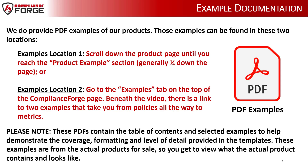We do provide PDF examples of all of our products. You can view examples by scrolling down about one-quarter of the way down each product page to the Product Example section. You can also find examples and other useful information by clicking on the Examples page on the menu bar near the top of the Compliance Forge website. Please note that these samples include a complete table of contents to help demonstrate coverage, formatting, and level of detail. These examples are from the actual products for sale, so you get to view what the actual product contains and looks like.